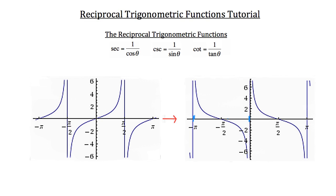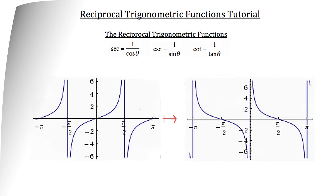With the cotangent function, the period is still pi units. But notice that the direction of the curve has changed — we're coming down from the left and passing over to the right, whereas with tangent we were coming up from the left and heading to the right. Now let's look at some problems involving these reciprocal trigonometric functions.